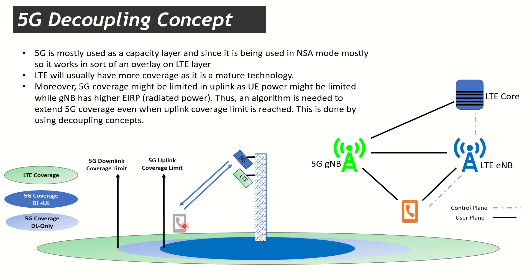When the UE is within 5G coverage — shown as the dark blue circle — it has 5G in both downlink and uplink, so data is going through 5G. In downlink, data comes from the core to the 5G gNodeB and then to the UE. In uplink, the UE sends data to the 5G gNodeB, which forwards it to the core.